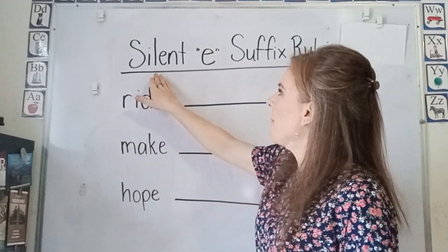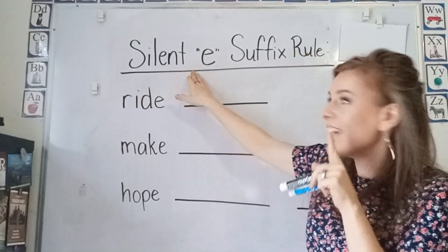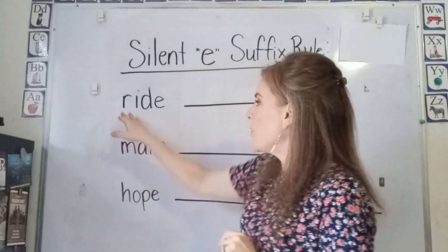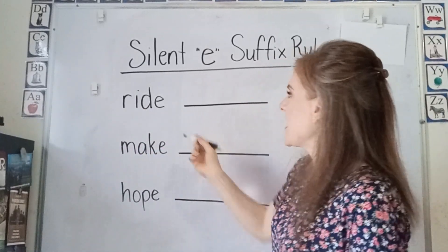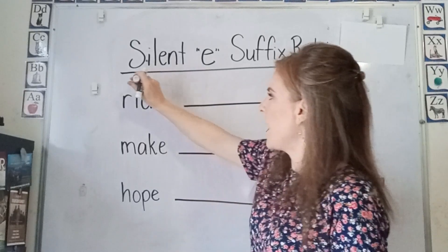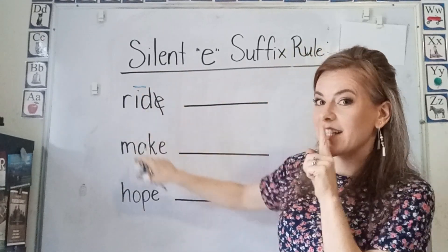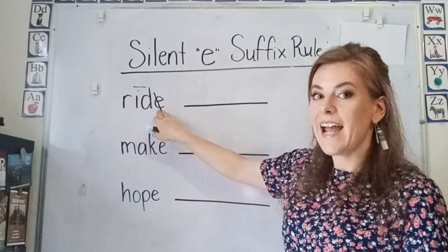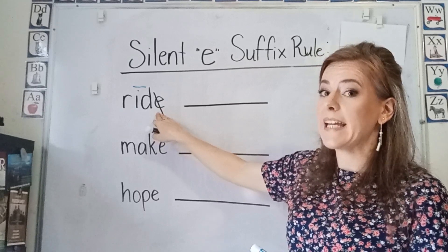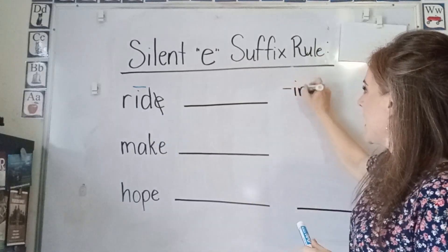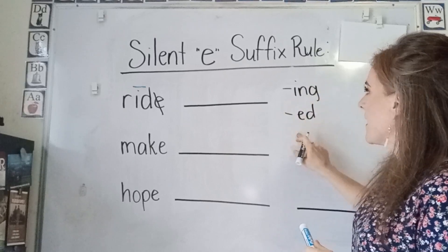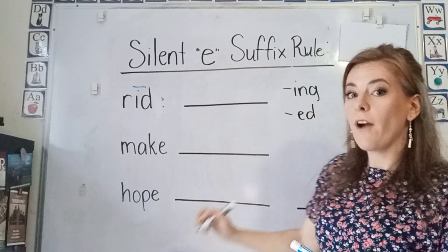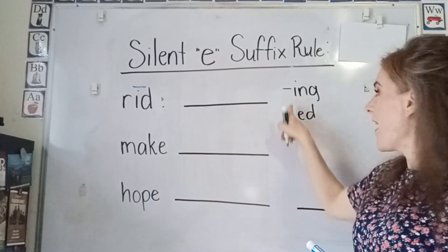Hello students, today we're going to talk about our silent e suffix rule. When you have a word with the silent e — we have two vowels, the first one's long, the second one's silent — and you're going to add a suffix that begins with a vowel, like -ing or -ed, you drop the e before adding your suffix that begins with a vowel.